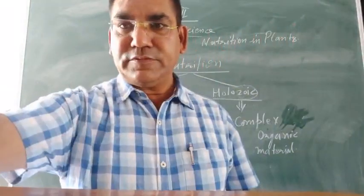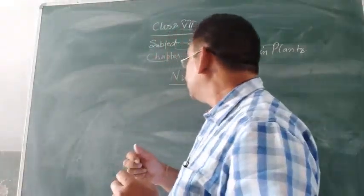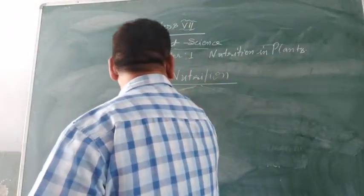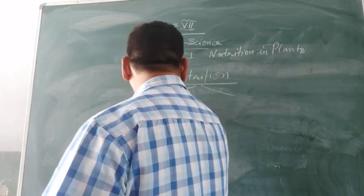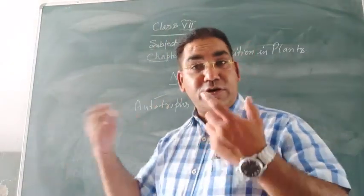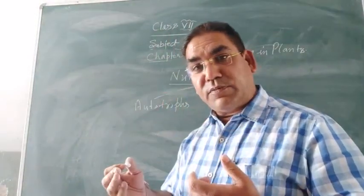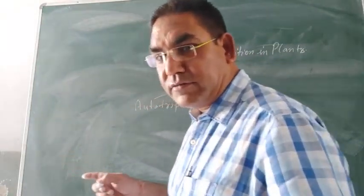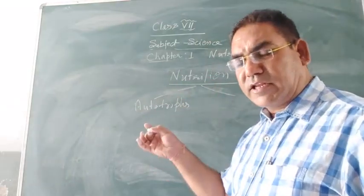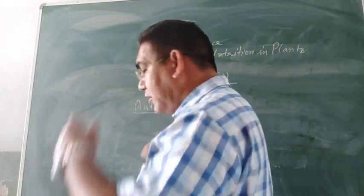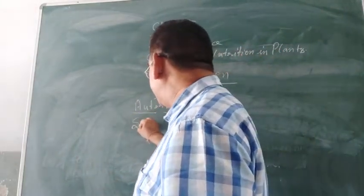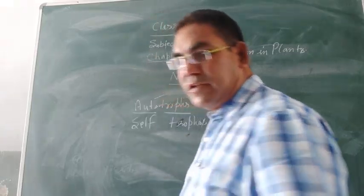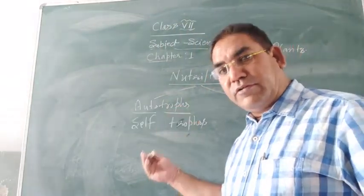When we discuss in detail, we will observe that nutrition in the case of plants may be of two types. Number one: autotrophs. Autotrophs — green plants — can prepare their own food by using carbon dioxide and water in the presence of sunlight. Auto means 'self,' and tropos means 'nutrition.' So organisms which prepare their own food are known as autotrophs.